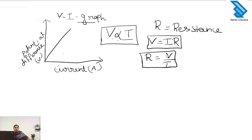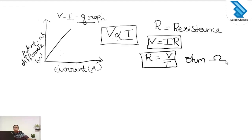R is the resistance, V is the voltage, and I is the current. The unit of resistance is ohm, denoted by the symbol Ω.